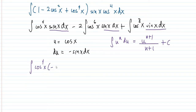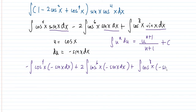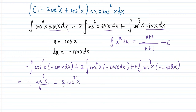We need a balancing factor of negative 1 to account for the differential u being negative sine x dx. Introducing that factor: the first term gets a negative sign, the second term — negative times negative — becomes positive 2, and the third term becomes negative. Applying the power formula, the final answer is: negative cosine to the 5th x over 5, plus 2·cosine to the 7th x over 7, minus cosine to the 9th x over 9, plus C.